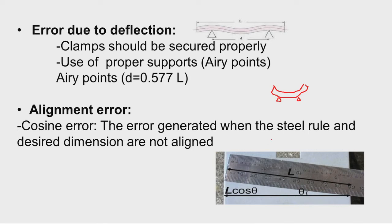There is another kind of alignment error. This happens when the measuring instrument's measurement axis and the desired dimension are not properly aligned. In the diagram, we have a workpiece whose length is to be measured using a scale, but the scale is not properly aligned with the workpiece. There is an inclination of theta between the measured dimension and the edge of the scale. Because of this, we get a length of l but the actual distance will be l cos(theta). This is known as cosine error, and it can be eliminated by proper alignment of the measuring tool with the physical dimension to be measured.